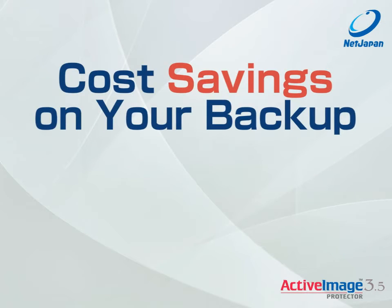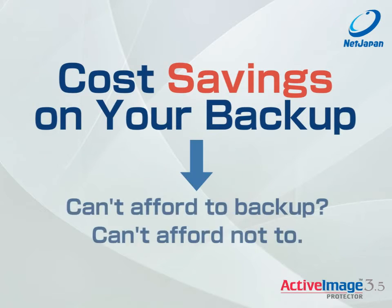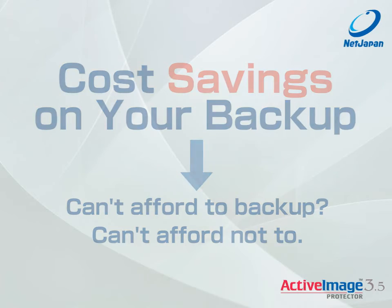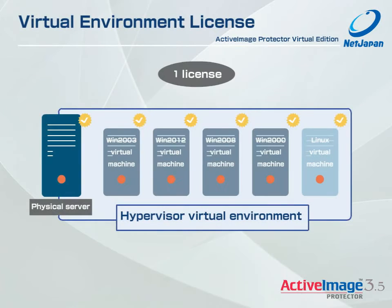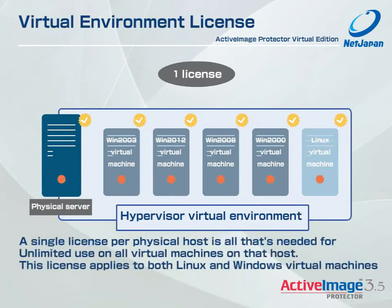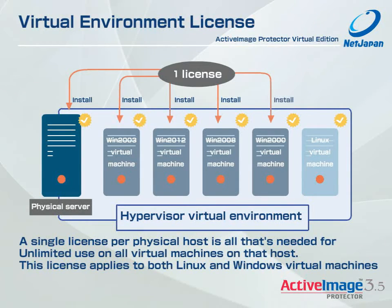Cost savings on your backup. Can't afford to backup? You can't afford not to. One cost saving option is the virtual environment license. With Active Image Protector Virtual Edition, a single license per physical host is all that's needed for unlimited use on all virtual machines on that host. This license applies to both Linux and Windows virtual machines.